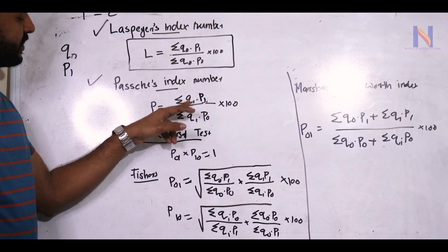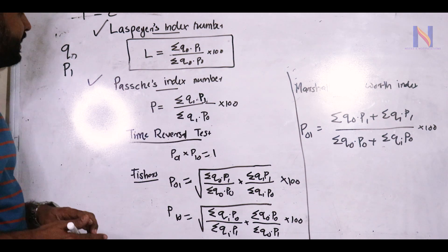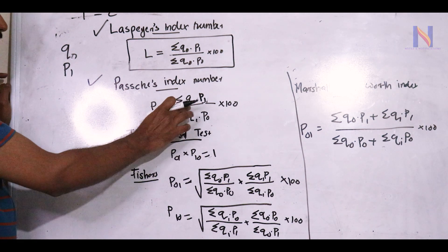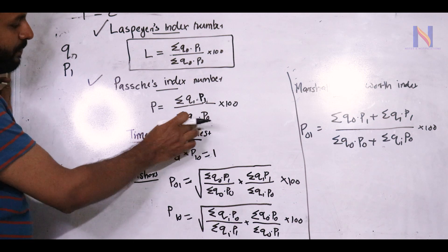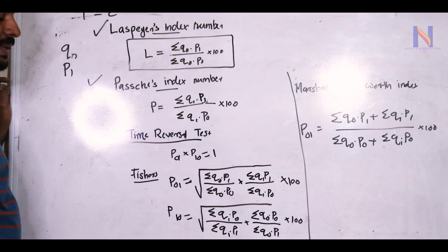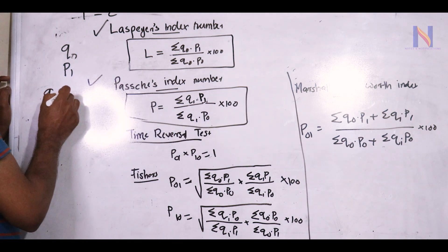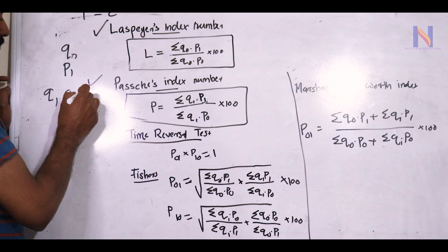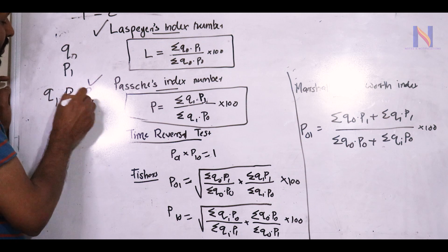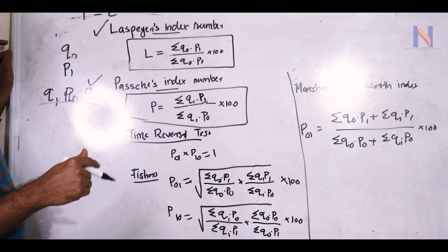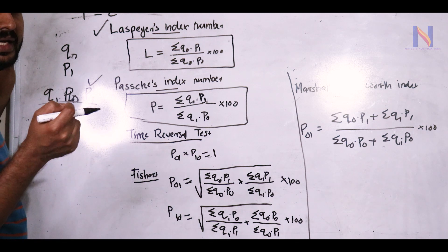Paasche's Index Number: P = Σ(Q1·P1)/Σ(Q1·P0) × 100. Here Q1 is the current year quantity, P1 is the current year price, and P0 is the base year price. Apply values from the question paper directly.